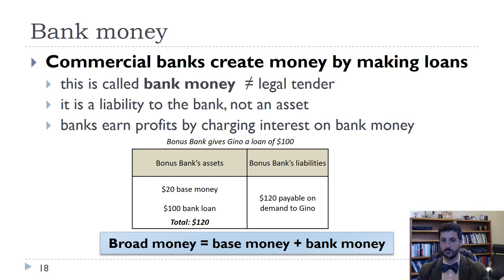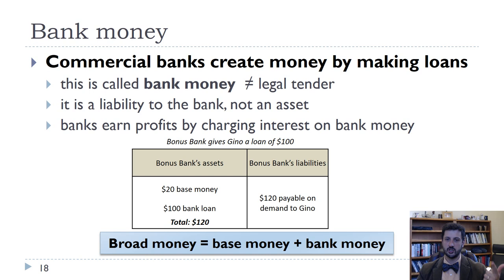We can also think of broad money as equal to base money minus reserves plus bank money. In the United States, we'll think about something like M1, which includes currency, checking accounts, and traveler's checks, but does not include reserves.